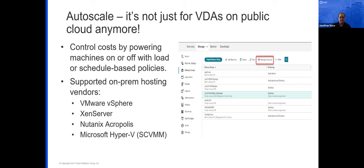Autoscale takes data from several sources — load evaluators for hosted shared desktops, usage patterns, schedules, and time limits — giving you the utmost flexibility. You can scale machine catalogs across sites or zones, whether on-prem or in cloud. Drain state is another unique capability that allows you to scale down single-session client OS VDAs in a delivery group to a pool size or buffer.